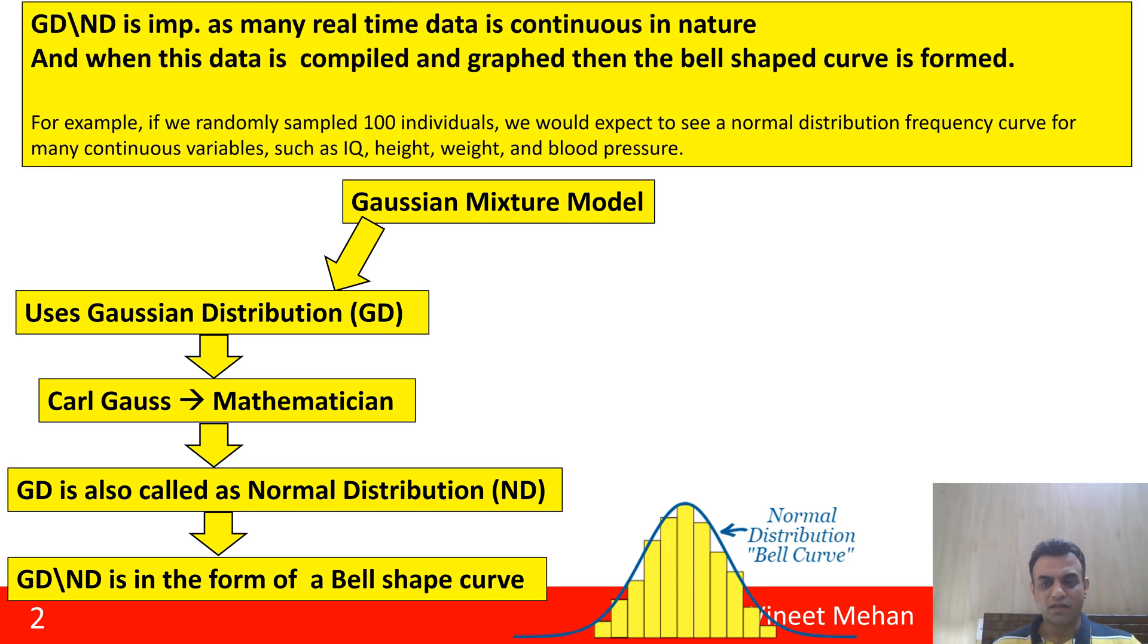Now such kind of curves are quite important in the area of statistics, as we could find out that the real world data is continuous in nature like the IQ of humans, the height, weight, blood pressure - all are continuous in nature. When we try to compile and graph such kind of continuous data, then the curve that is formed is the bell-shaped curve.